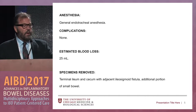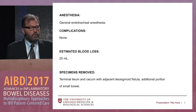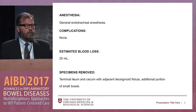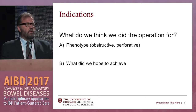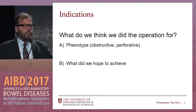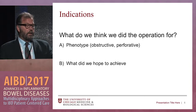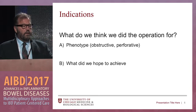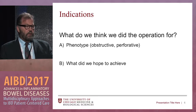In any case, these are the specimens — and I want to come back to that: terminal ileum and cecum with adjacent iliosigmoid fistula and an additional portion of small bowel. What's that about? The indications section is to me the most important part, where I spend the most time describing what the phenotype was and what we hope to achieve.